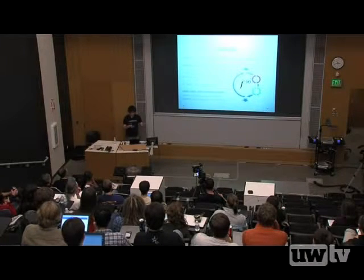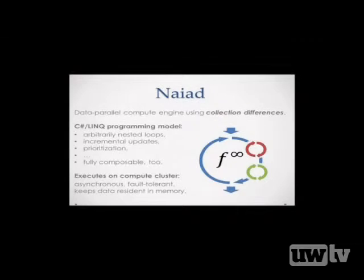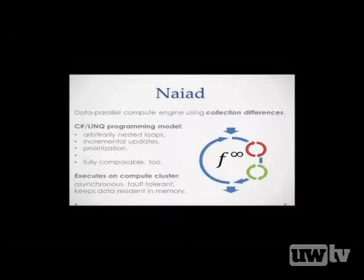NAIAD presents something that looks like a very pleasant program interface — C# and LINQ. This lets people use types, use subroutines, and all sorts of nice things that are good for maintaining and developing programs rather than a bunch of scripts you have to fire off in the correct order. We have arbitrarily nested loops, incremental updates, and prioritization. There have been systems that did each of these individually, but you couldn't pick any that did all of them. Not only can you do all of them in NAIAD, but their performance benefits compose in a really nice way.